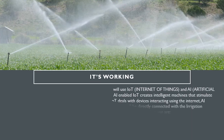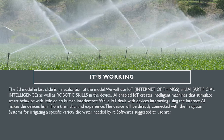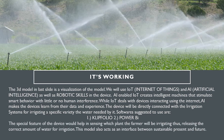The 3D model shown in the last slide is a visualization of the model. We will use IoT and AI as well as robotic skills in the device. AI-enabled IoT creates intelligent machines that simulate smart behavior with little or no human interference. While IoT deals with devices interacting using the Internet, AI makes the devices learn from the data and experience. The device will be directly connected with the irrigation systems, delivering water specific to the variety and the amount needed. The special feature of the device would help sense which plant the farmer is irrigating, thus releasing the correct amount of water. This model also acts as an interface between sustainable present and future.